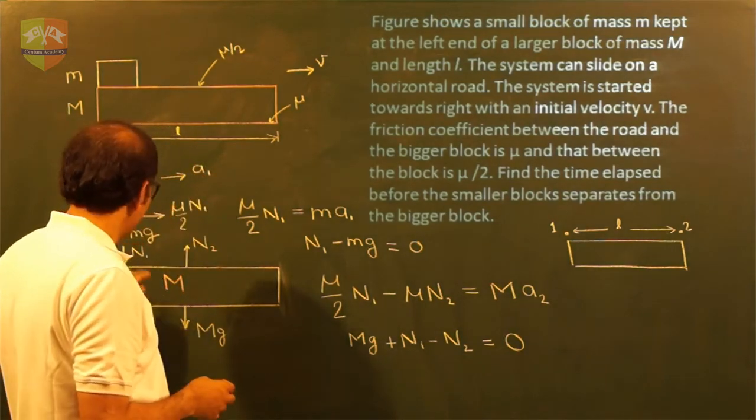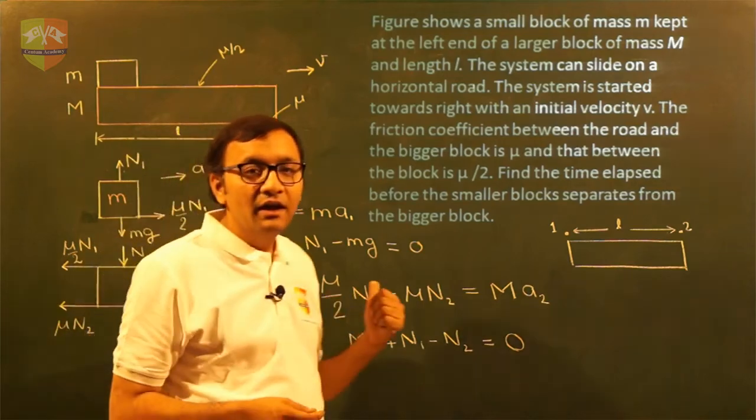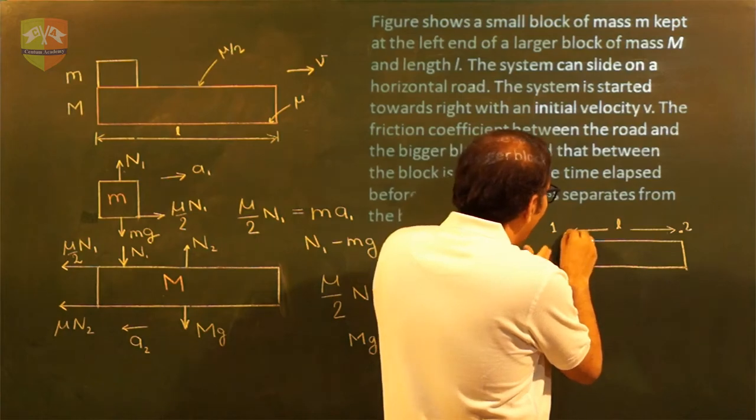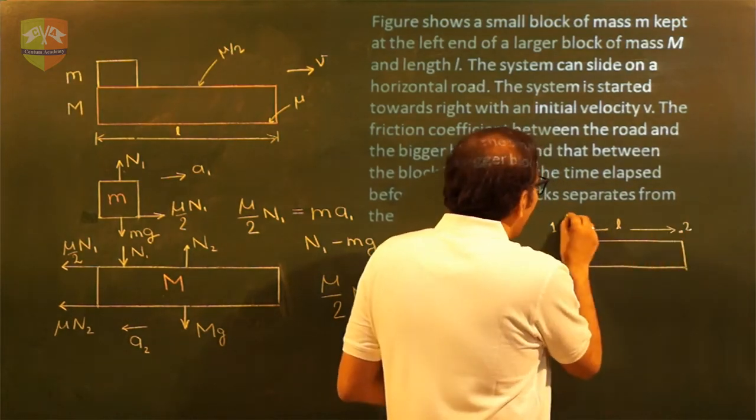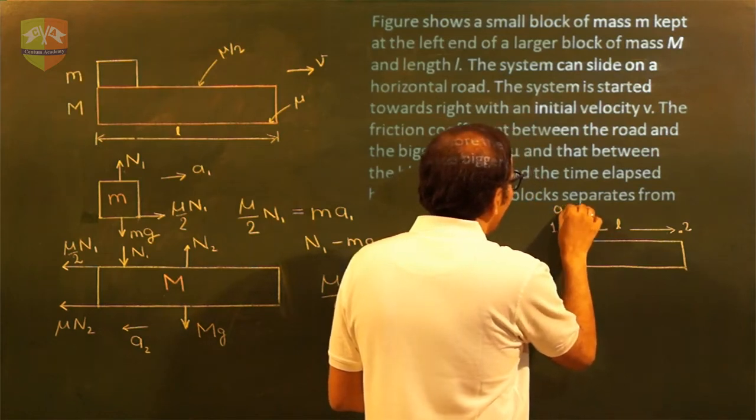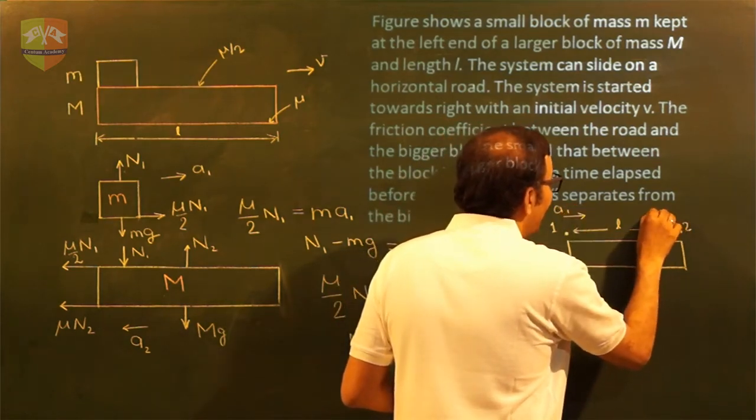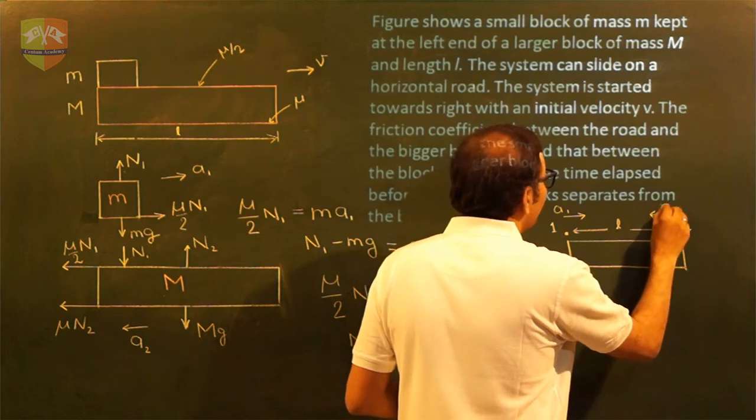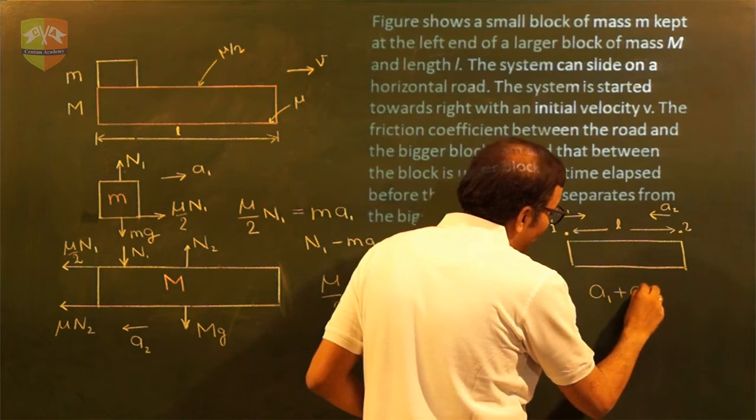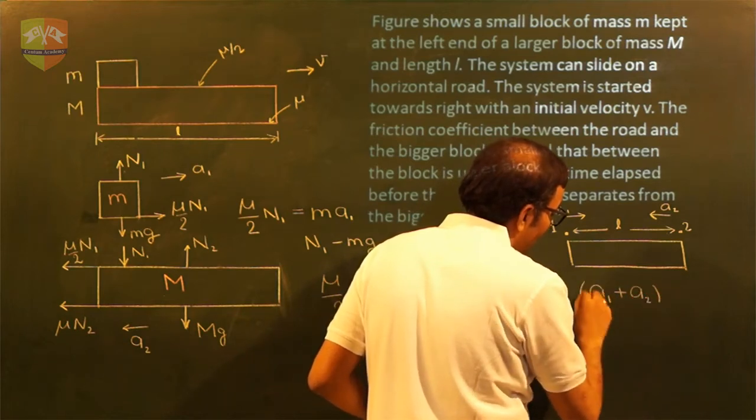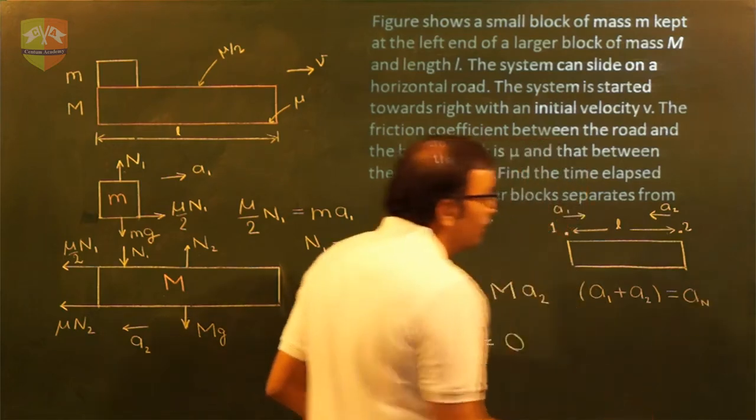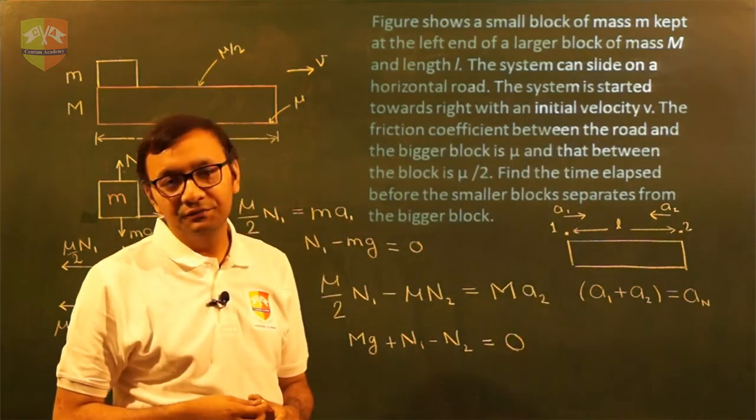And capital M has acceleration backward direction, which is A2. So net acceleration of approach from 1 to 2 is: this is small m which is moving with A1, and this capital M is coming towards it with A2. So acceleration of approach is A1 plus A2. Let us call this as A_n, let's say that this is a net acceleration.